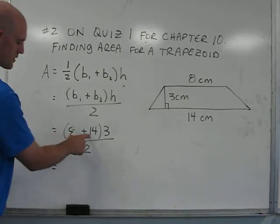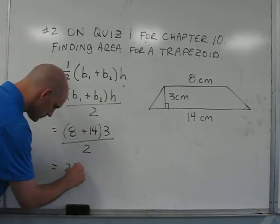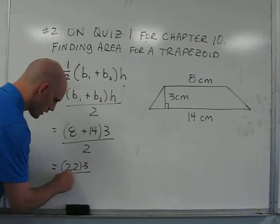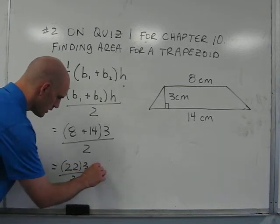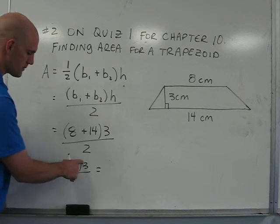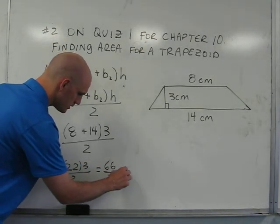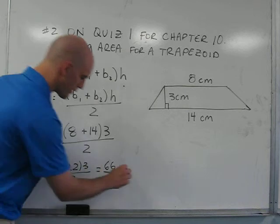Eight plus fourteen is twenty-two, times three, over two. That gives us twenty-two times three, which is sixty-six, over two, which is equal to thirty-three.